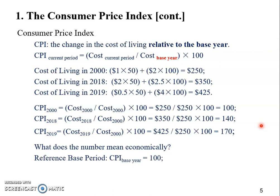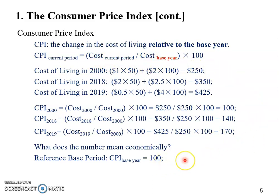From the CPI numbers we immediately know how much the price level of the current period has increased compared to the base year. We also know that the base year or base period CPI should always be 100. If you go back to the formula, you'll realize that if the current period is the base year, the numerator and denominator are exactly the same, so the CPI will always be 100.